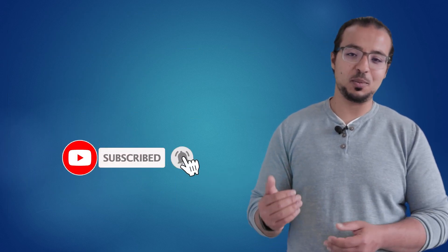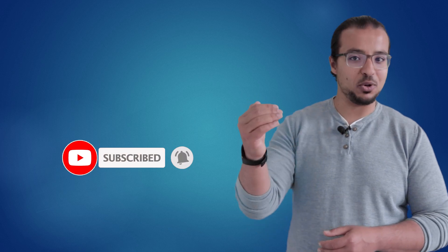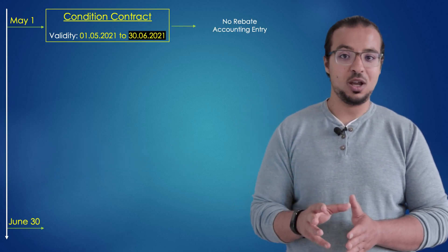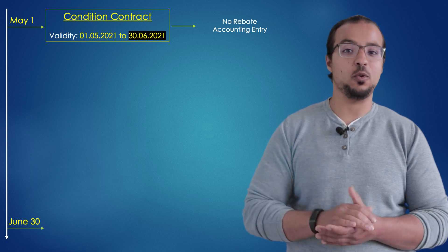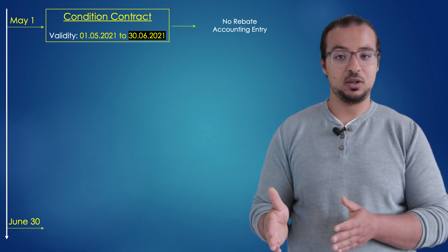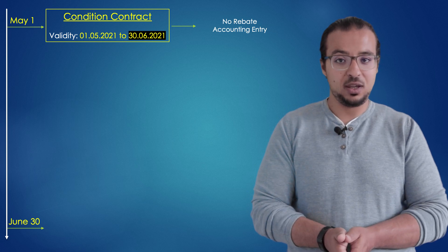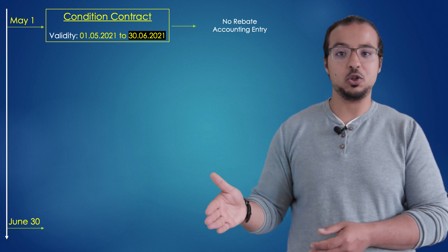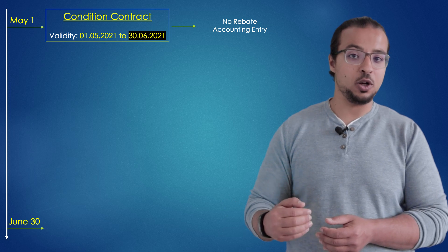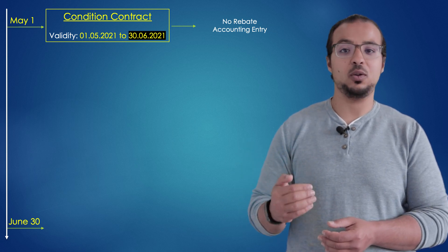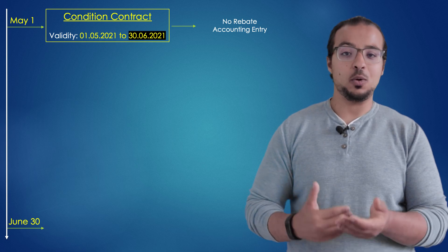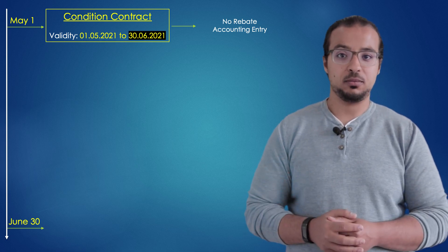Let's make it a little more complicated. Going back to our example, this time the condition contract will not be only for the month of May, but for May and June. I will create the contract today, and the end of the contract will be 30 June. On 30 June, I'm going to check the total number that the customer achieved and post the rebate expense.